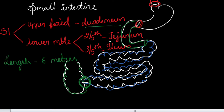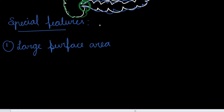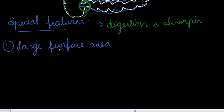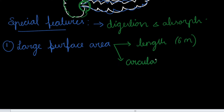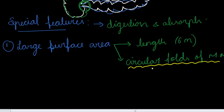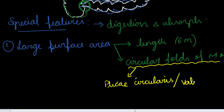We will discuss each part of the small intestine — duodenum, jejunum, and ileum — separately in the next videos. Now we are going to discuss the special features of small intestine, because it is designed mainly for digestion and absorption. The first special feature is large surface area, mainly because of the greater length of around six meters and the circular folds of mucous membrane, also called plicae circulares or valve of Kerckring.